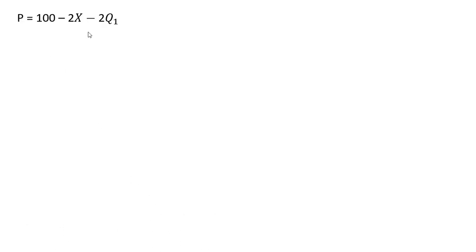Rewriting our inverse market demand, and now we're going to get total revenue. Total revenue is price times quantity. So for firm 1, just the price times firm 1's output. Multiplying this firm 1's output by what's in parentheses here, we get this result.